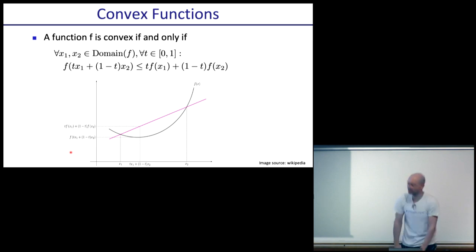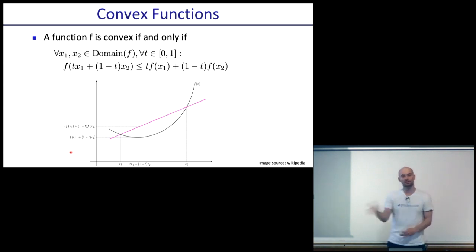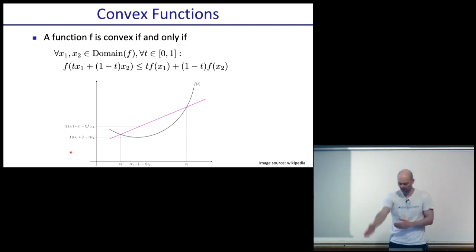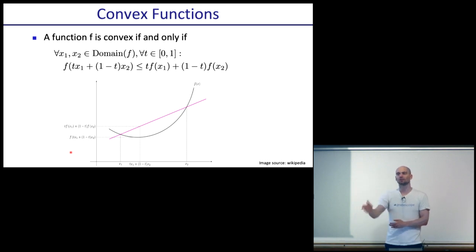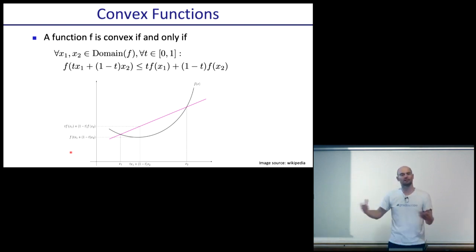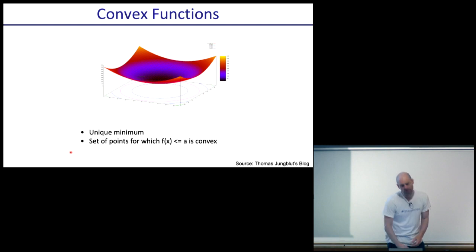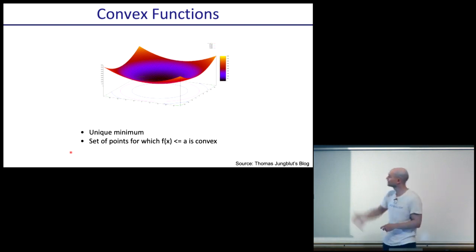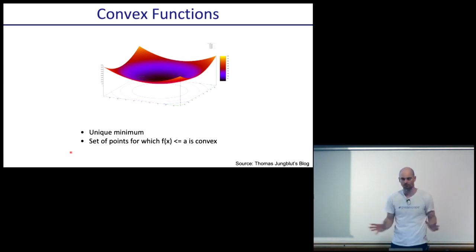A quick reminder: in 1D a convex function is bowl-shaped. In higher dimensions you take a slice in one direction and check whether the line between two points lies above the function — if so, it's convex. For a 2D function you can draw contours: if it is 2D, you can look at it and the contours will be convex.